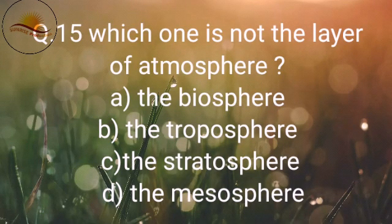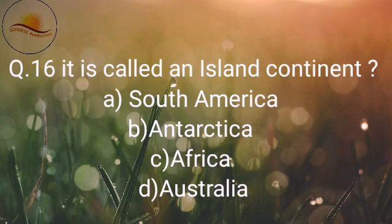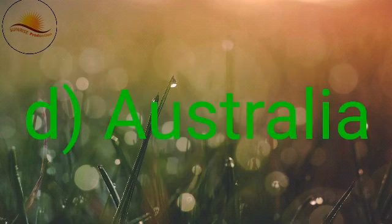Next question: which is the lowest layer of the atmosphere? The answer is A — the Troposphere. Next question: it is called an island continent. The answer is B — Australia.